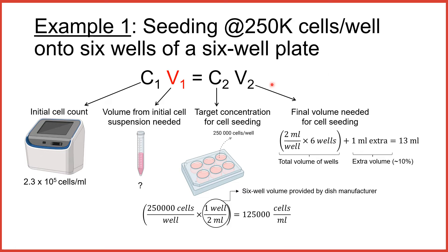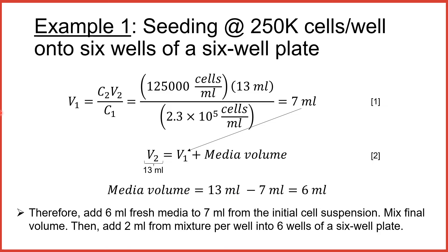Similarly, to find the final volume of cell suspension to seed all 6 wells, V2, we multiply the volume per well with the number of wells and typically add an extra volume of about 10% of the total volume to account for pipetting errors, which is 1 milliliter extra in this case. In this way, we have all the other variables in the dilution formula and can go ahead to calculate V1. Plugging in all the variables and isolating V1, we get the volume 7 milliliters that we need to take from the initial cell suspension.